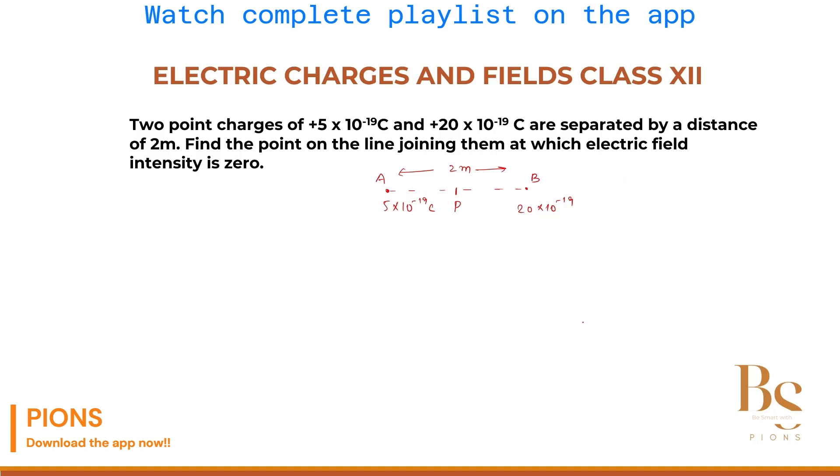At point P, electric field due to A is outward, away from the charge. Due to charge at B, outward, away from the charge. This is electric field at point P due to A, EPA. Electric field due to B at point P, EPB. I hope this is clear.